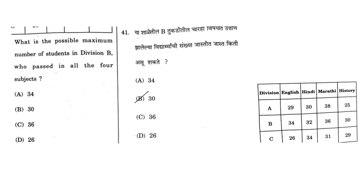Moving on to the first question on that data — for your reference I have given the table to the right side. The question is: what is the possible maximum number of students in division B who passed in all four subjects? It is very easy to understand. In B division, you just see the minimum — the lowest number — that is the possible maximum students who passed. The lowest number in B division: English 34, Hindi 32, Marathi 36, and History 30. So 30 is the correct answer.